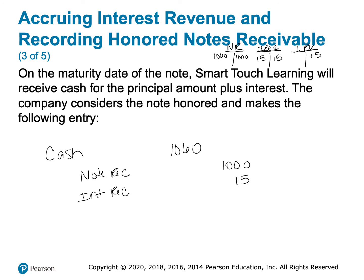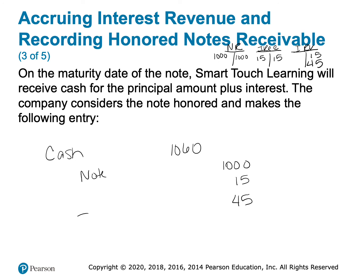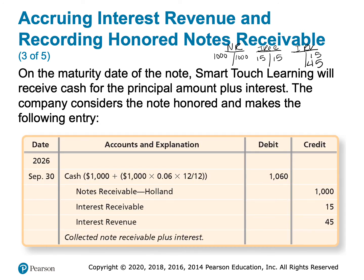Since debits must equal credits, we need another $45 credit — that goes to interest revenue. Interest revenue currently shows a $15 credit balance, reflecting only the first period. Crediting it for an additional $45 brings the total to $60, which is the full interest earned over the life of the loan. On our multi-step income statement, this interest revenue will show up in the other revenue section, because interest revenue is always classified as an other amount.